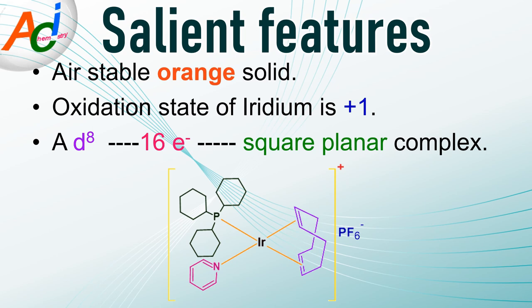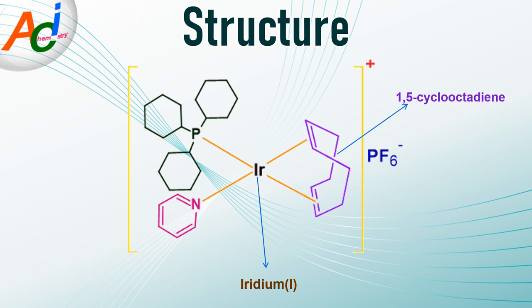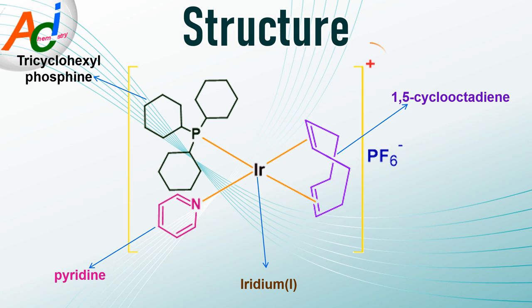The Crabtree's catalyst is an air-stable orange colored solid. The oxidation number of iridium is plus 1. It is a d8, 16-electron square planar complex. The iridium ion is coordinated to 1,5-cyclo-octadiene, tricyclohexylphosphine, and pyridine ligands in a square planar geometry. Since all of the ligands are neutral, there is a plus 1 charge on the complex part, which is associated with the hexafluorophosphate ion.